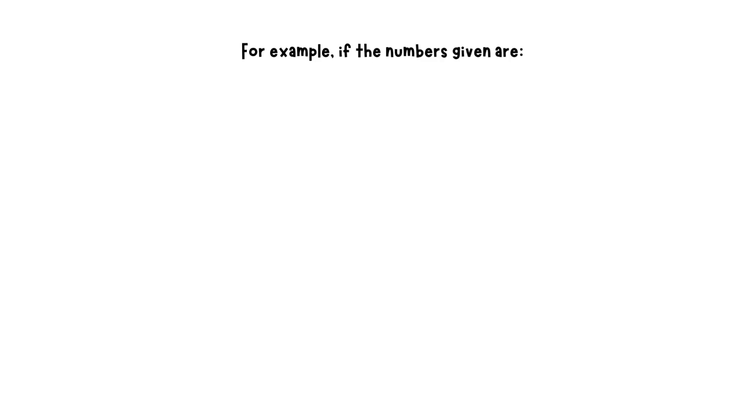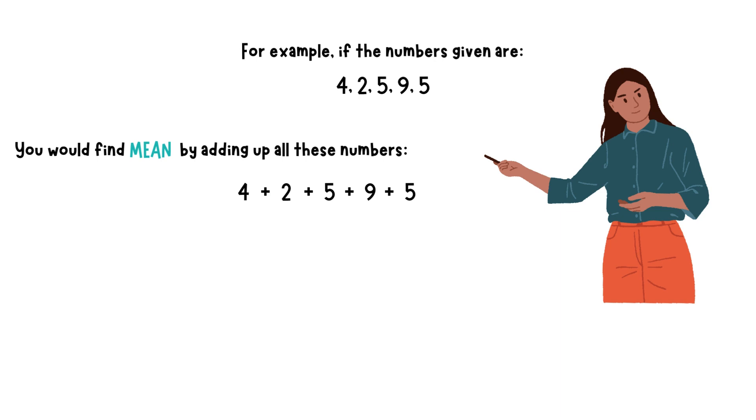For example, if the numbers given are 4, 2, 5, 9, 5, you would find mean by adding up all these numbers. So, 4 plus 2 plus 5 plus 9 plus 5 equals 25.